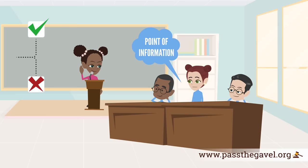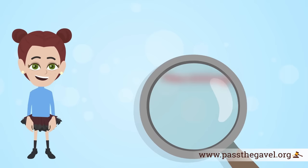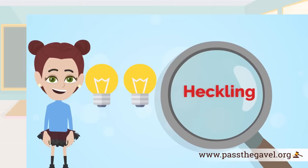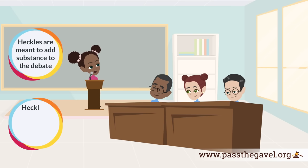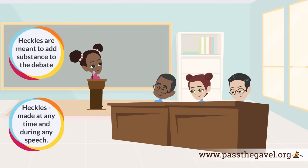The speaker may then accept or reject the POI. If the speaker accepts a POI, an opponent has up to 15 seconds to deliver it. The second feature is heckling — a respectful interruption during an opponent's speech, made by saying one or two words. Heckles are meant to add substance to the debate, not to distract or harass the speaker.